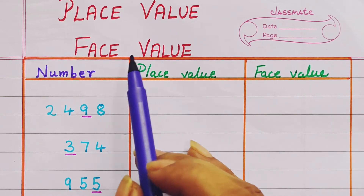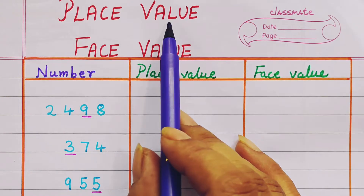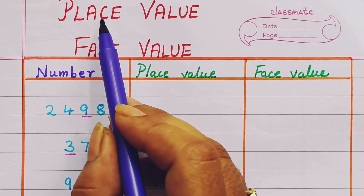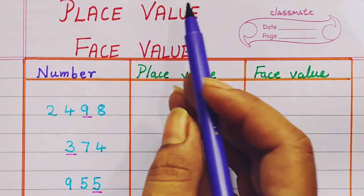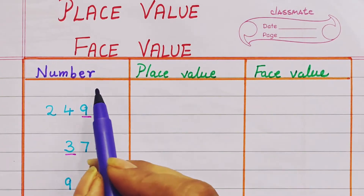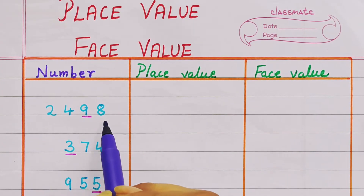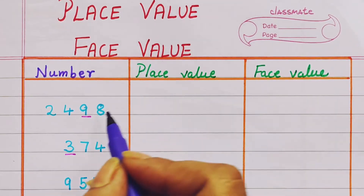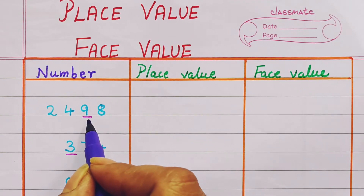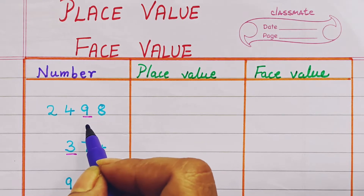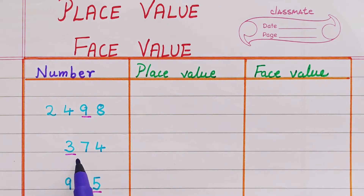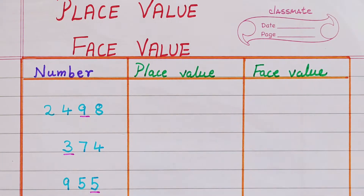Hi everyone, welcome back. Today we are going to learn place value and face value. Place value is the position of the digit — it represents the position of the digit in the number. Whereas face value is the number itself. It will be easy when you see some examples.